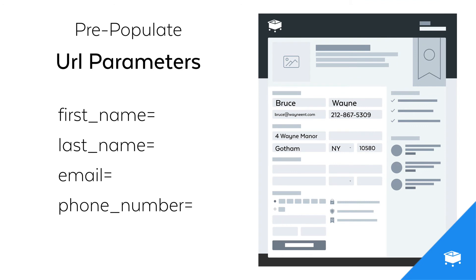Taking a look at the particulars, these are the URL parameters you can currently use: first_name, last_name, email, and phone_number. These are the URL parameters that will pre-populate fields on your SamCart checkout page.